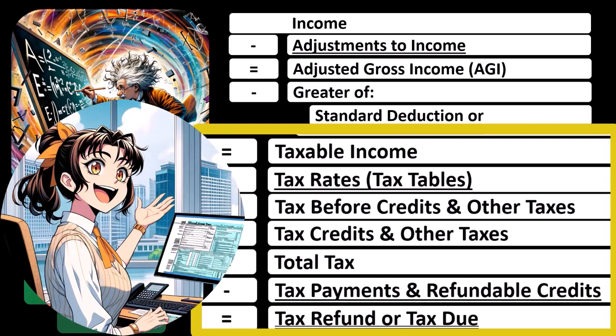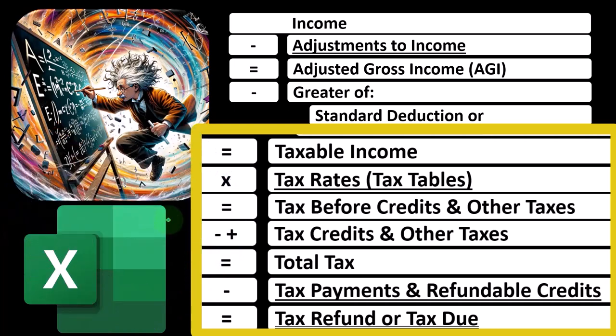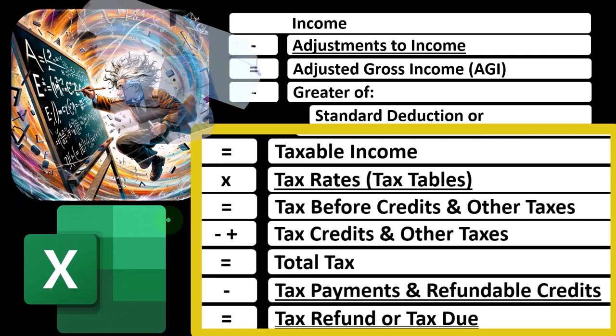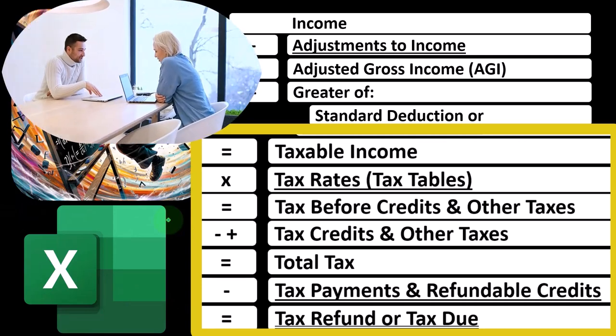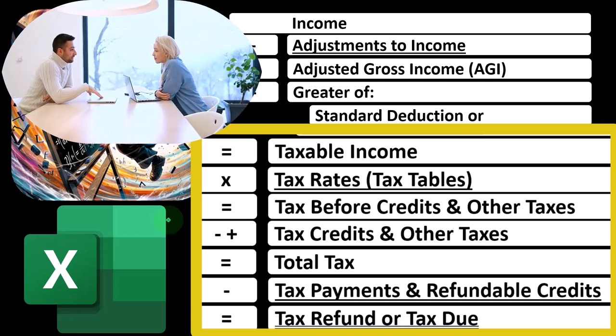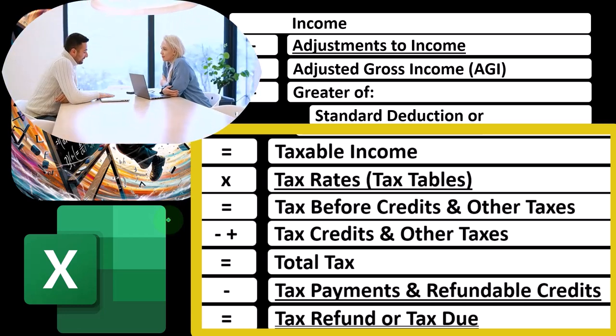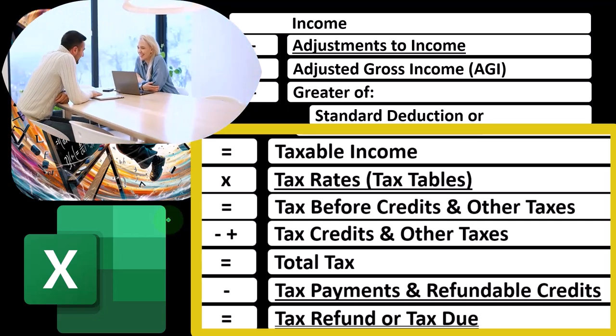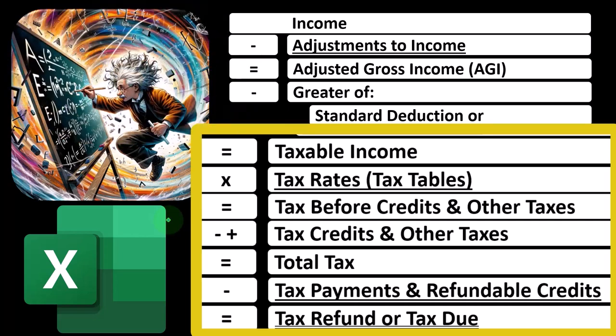You want to understand things better because the software might be able to do the calculations, but you as the tax preparer still have to explain it to people. Even if you can do the data input without understanding — which I wouldn't really recommend because then you can't tell if something is wrong — it's going to come up that the client's going to say, 'Why is that the case?' And you can't just say, 'Well, that's what the software did.' I mean, you could, but that doesn't give a whole lot of confidence when you're the client.